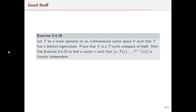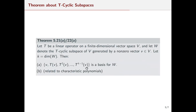Now let's look at exercise 5.4.26. Let T be a linear operator on an n-dimensional vector space V such that T has n distinct eigenvalues. Prove that V is a T-cyclic subspace of itself. The hint says to use exercise 5.4.23 to find a vector v such that a certain set of vectors is linearly independent — a set that looks a lot like the one in Theorem 5.21a, which will be useful here.